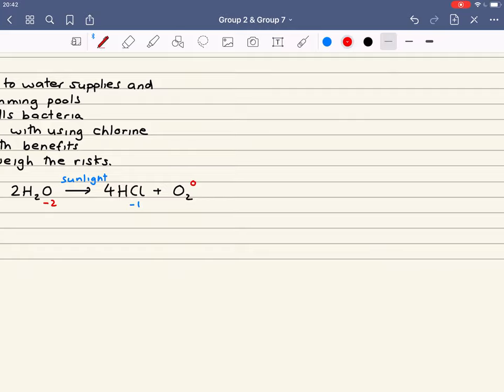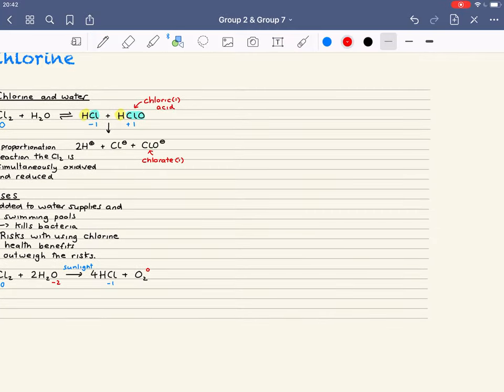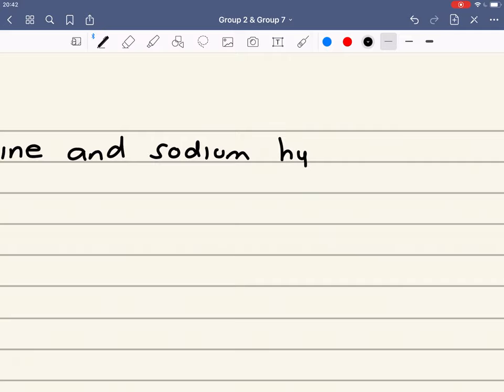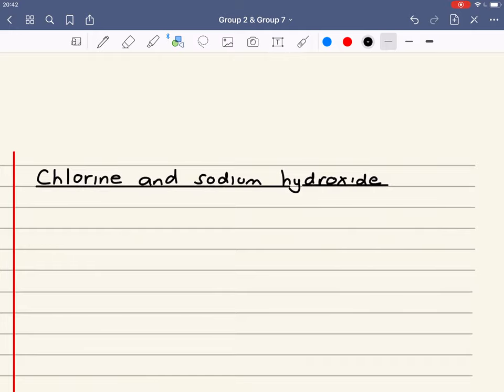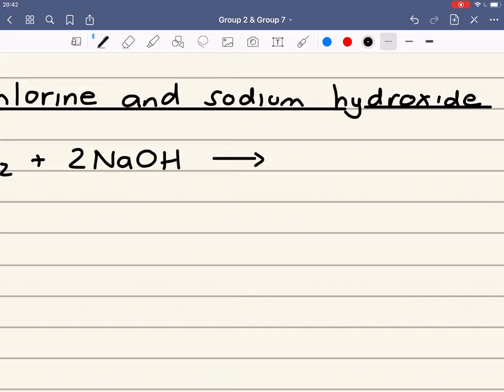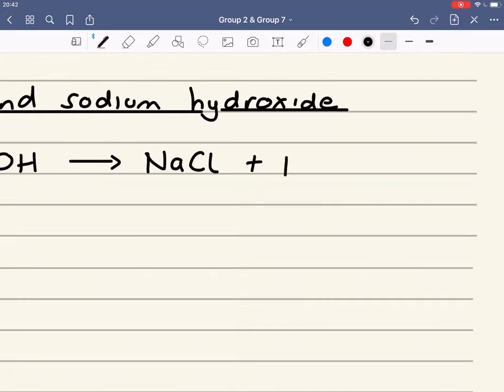There's one more reaction we're going to have a look at. And this is a very similar reaction to the reaction of chlorine with water. Chlorine reacts with two lots of sodium hydroxide. And we get three products this time. One is sodium chloride. The other is sodium chlorate one. And the other is water.